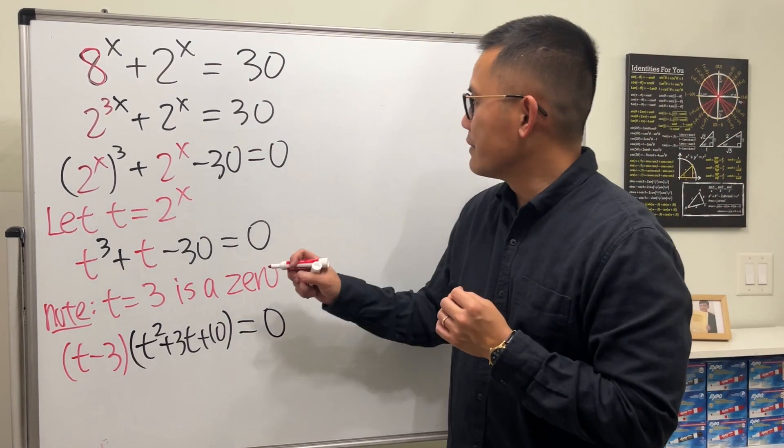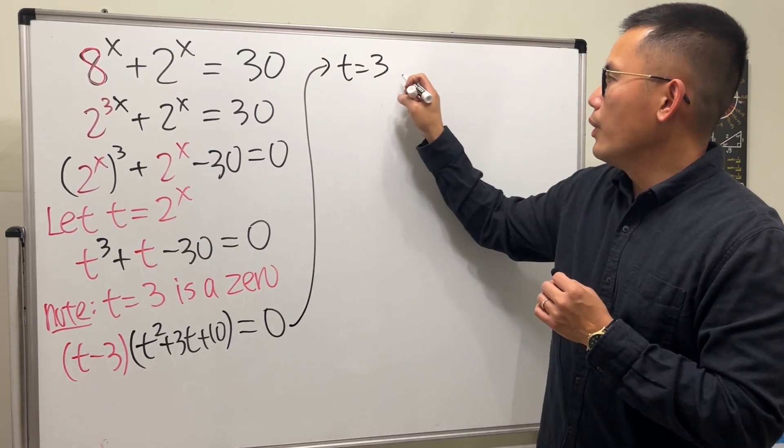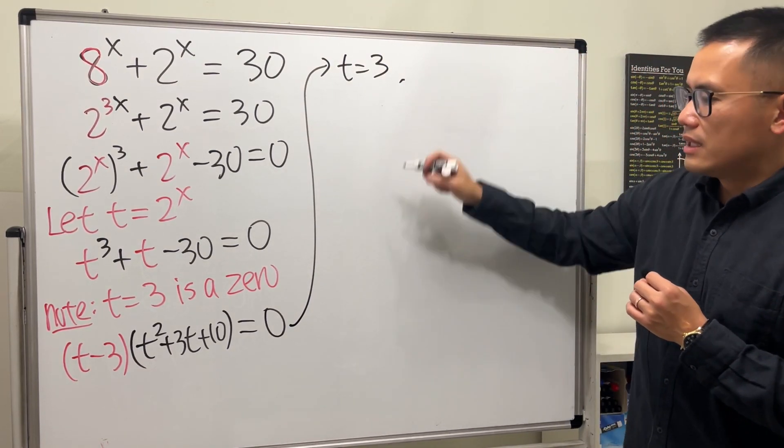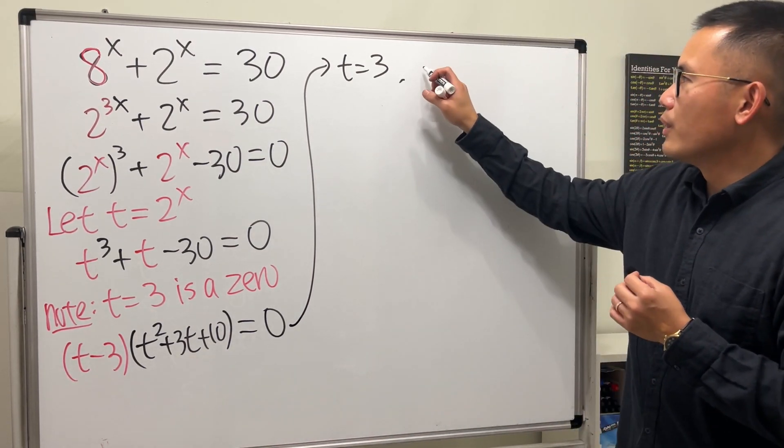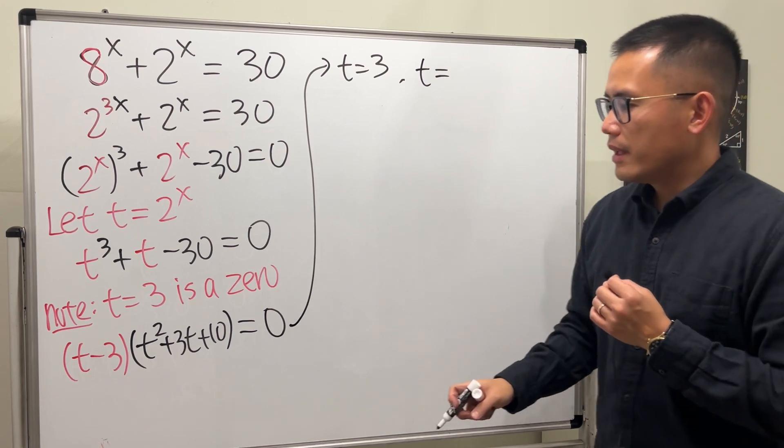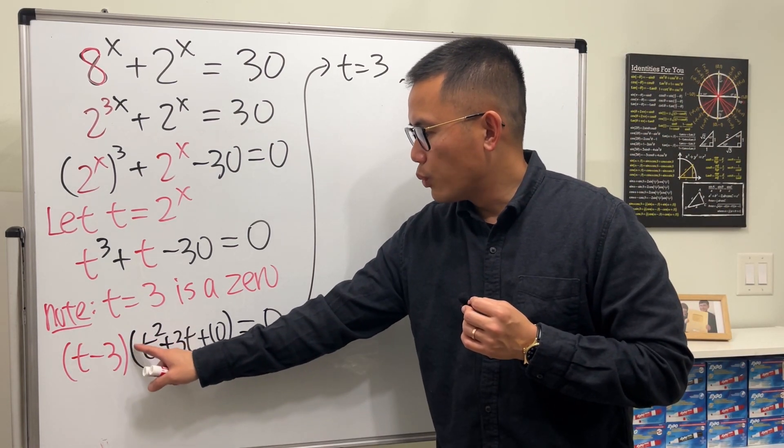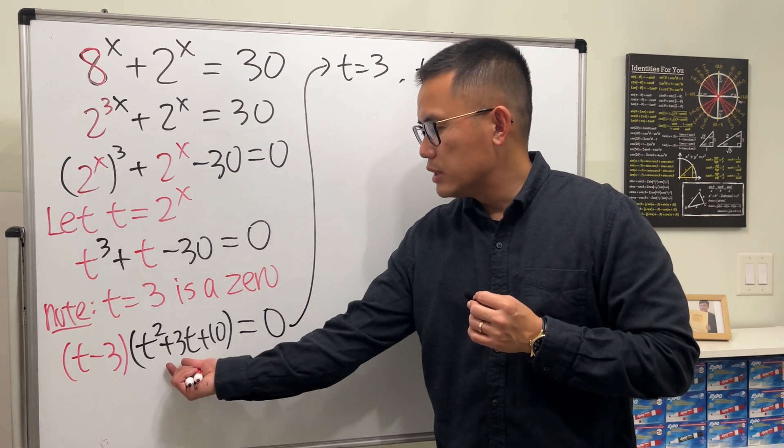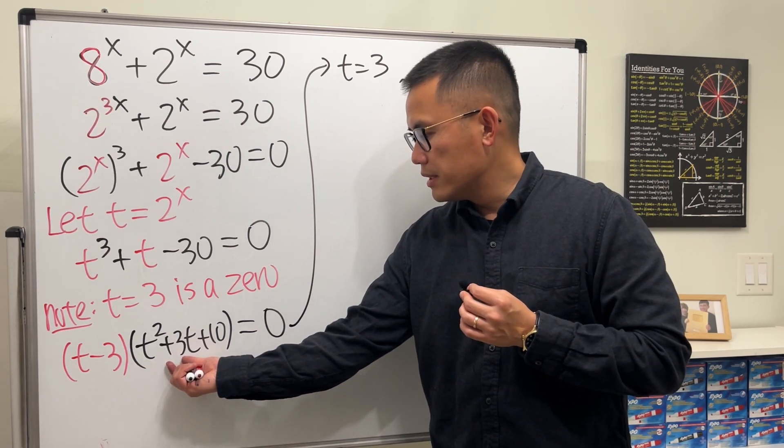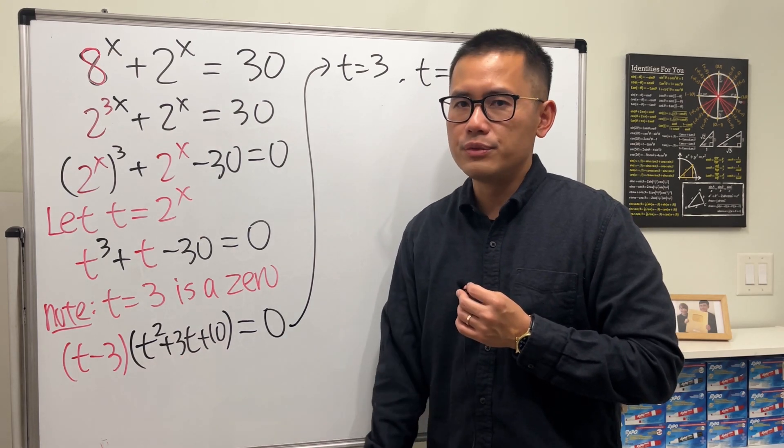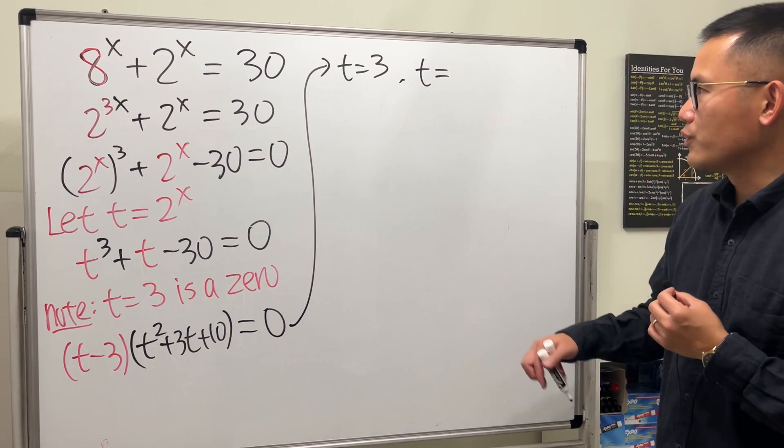So now you can see that we have either t is equal to 3, or the other one is, for this, we will just have to solve it by the quadratic formula. And the reason I'm choosing quadratic formula is because we have a 1 in front of the t squared, but this right here is an odd number. So if I was going to do completing the square, I would take half of this, half of 3 is 3 over 2, it's a fraction. So quadratic formula.